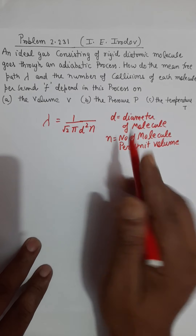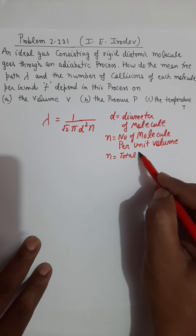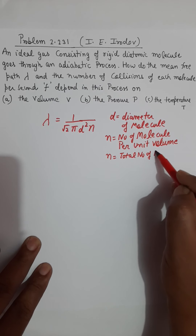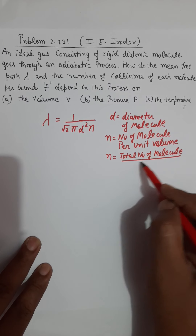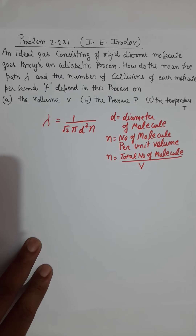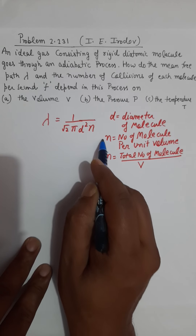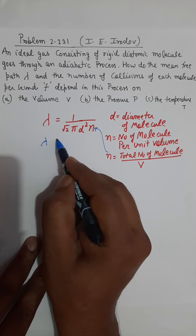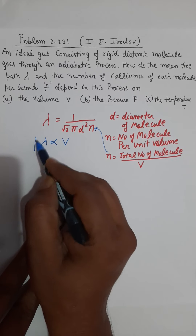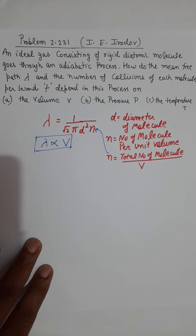Since n is the number of molecules per unit volume, n can be replaced by the total number of molecules divided by volume V. If you substitute this into the expression, you find that lambda is now proportional to V, the volume. So from an examination point of view, remember that the mean free path is proportional to volume.